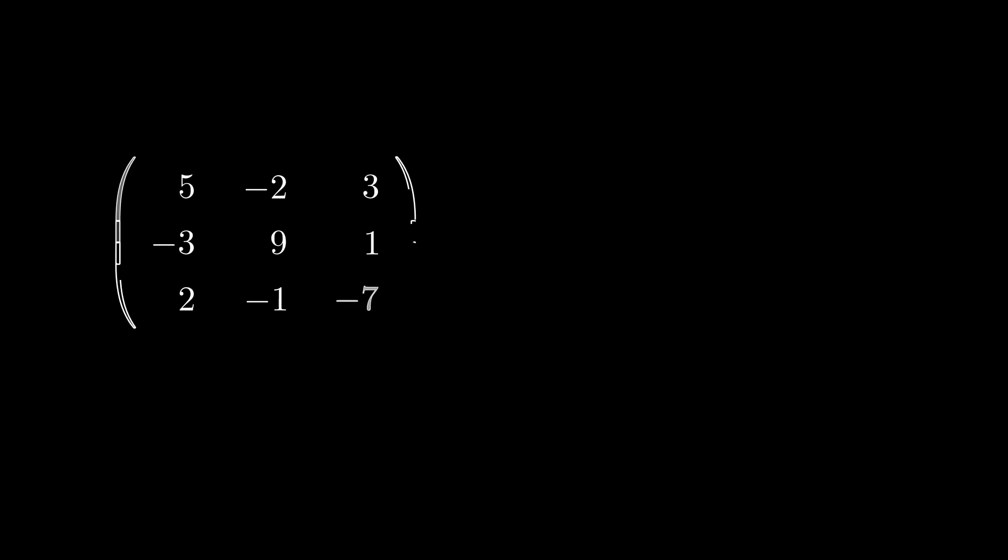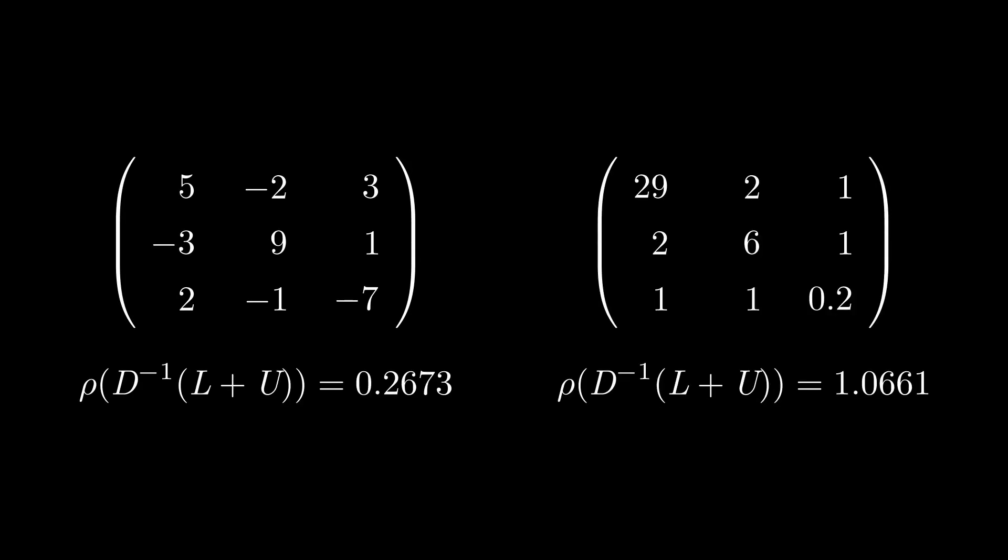For our example case, it was 0.26. But for a system like seen on the right, with the b-vector remaining unchanged, the spectral radius is bigger than 1 and therefore we should not be surprised by the divergence of our residual.